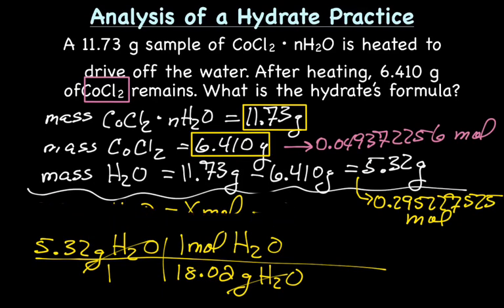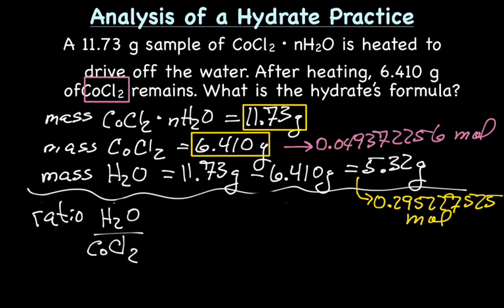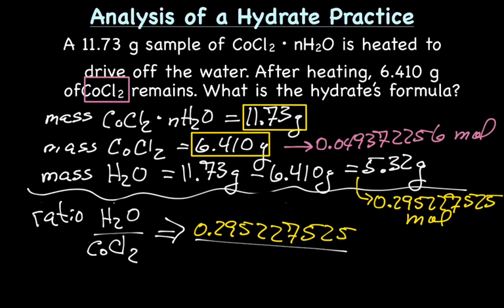So now that we have the moles of both the water and the anhydrous cobalt-2-chloride, we're going to do the mole ratio. So we'll have the ratio of water over our cobalt-2-chloride. So that is going to be, for the water, we'll have 0.295227525 moles. And our cobalt-2-chloride, 0.049372256. And when we divide, it's something like 5 point, a whole bunch of nines and other numbers. So basically 6.